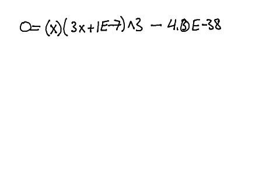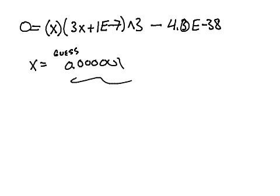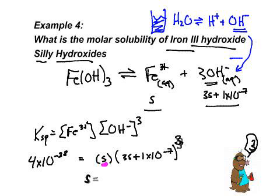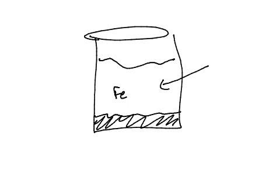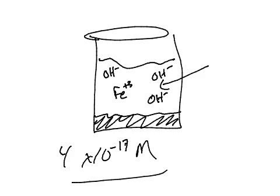You just have to plug this into your solver and solve for S. The molar solubility, by the way folks, is always simply S. It is the individual S. Not the 3S, not the 2S. They're asking just for what is S. I am frantically putting it into my calculator. You do have to use X's in the calculator. X times 3X plus 1E negative 7, parentheses, caret 3, minus 4E negative 38. And set that essentially equal to 0. I got 4.0 times 10 to negative 17. So the molar solubility is 4 times 10 to the minus 17 moles per liter.